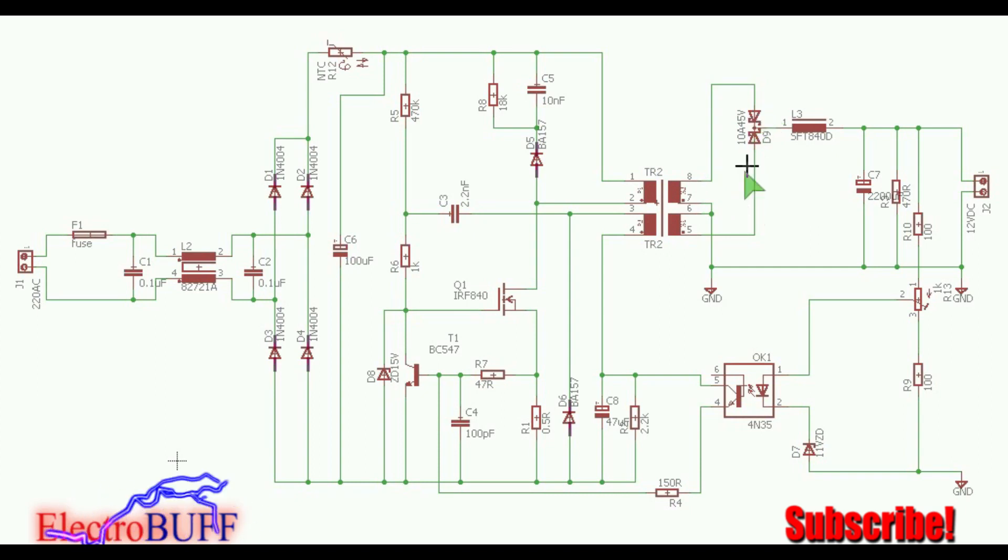It's a package which contains two diodes in one. You can use the MBR 1045 or any other TO-220 package which can handle at least 5 amperes and has a voltage rating over 60 volts.